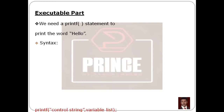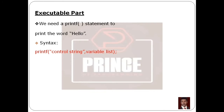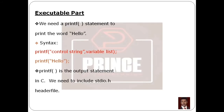To use the printf statement, write printf with parentheses, then double quotes inside, then the text to print, then close the double quotes, close the parentheses, and add a semicolon. In this program there are no variables, so we just use the text directly as a control string inside the double quotes. The printf function is available through the stdio.h header file.